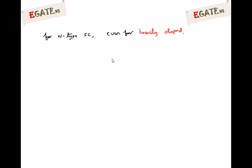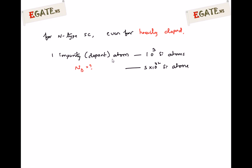The question is related to N-type semiconductor. Even for the heavily doped case, one impurity atom is added for every 1000 silicon atoms. Silicon has 5×10²² silicon atoms per centimeter cube. So how many dopant atoms are added when there are 5×10²² silicon atoms?